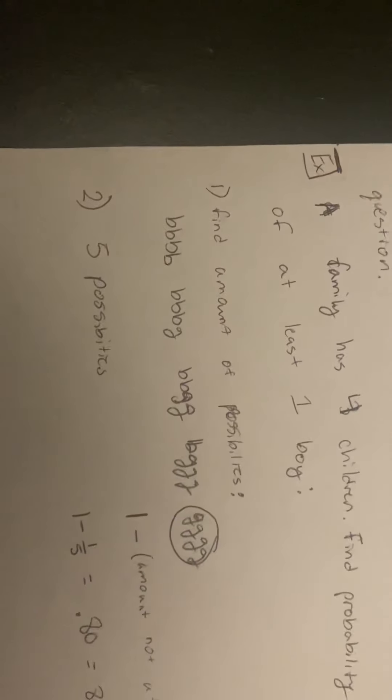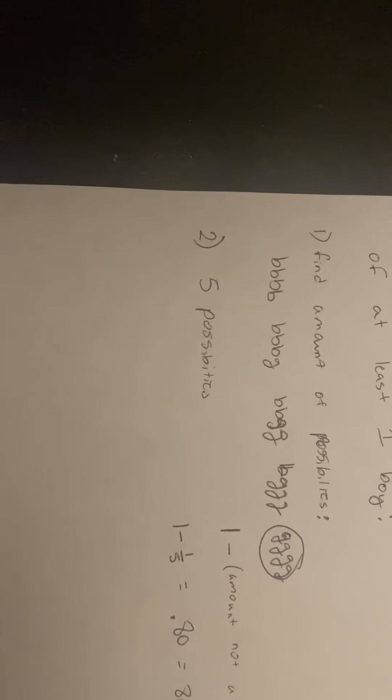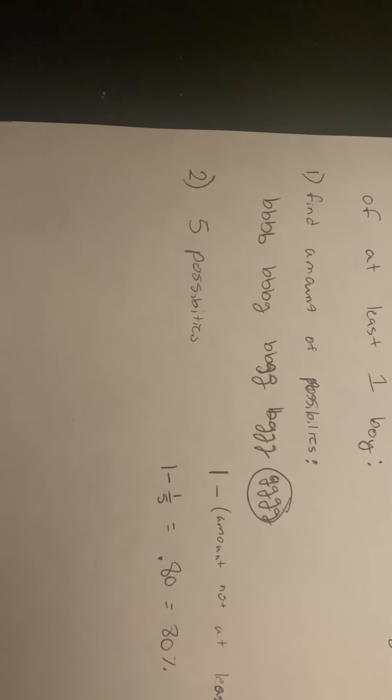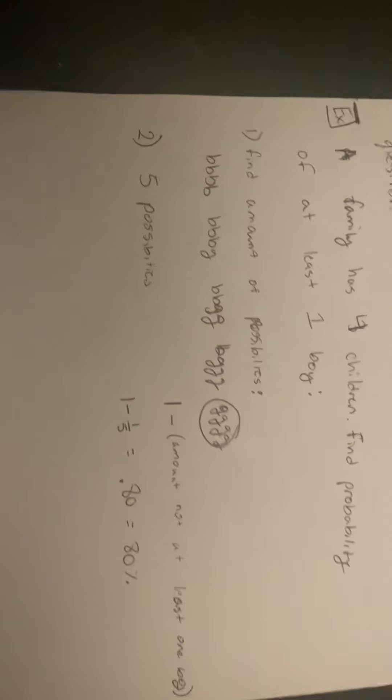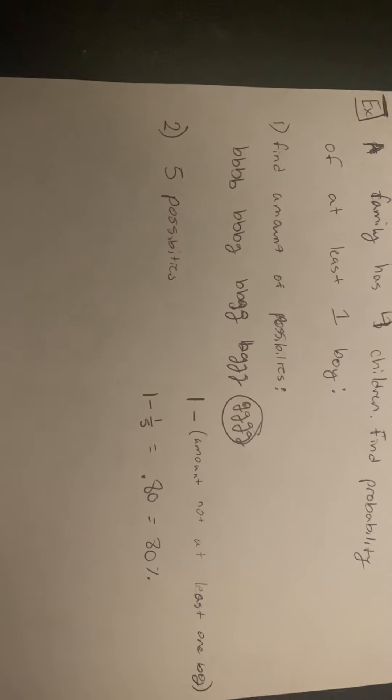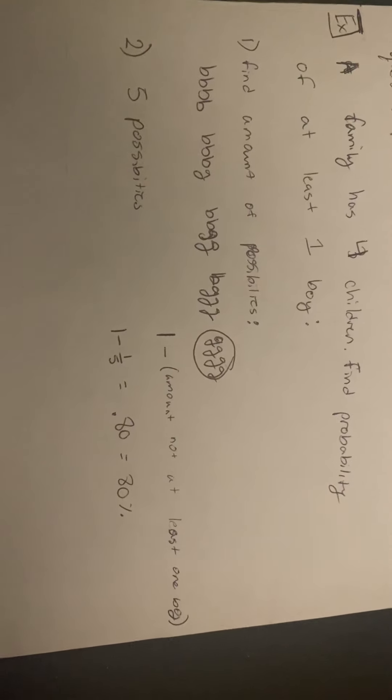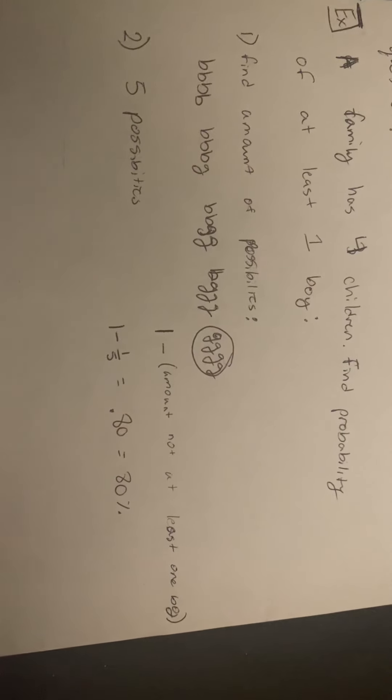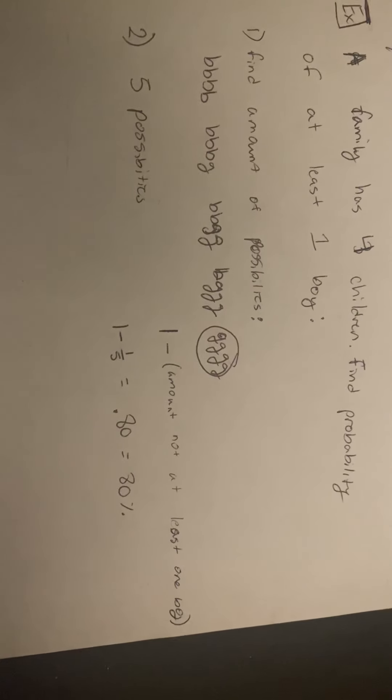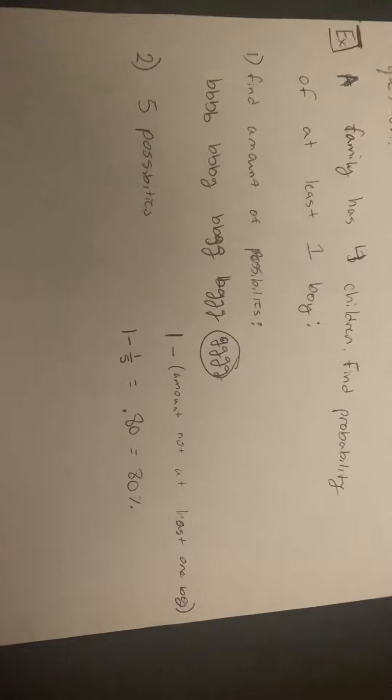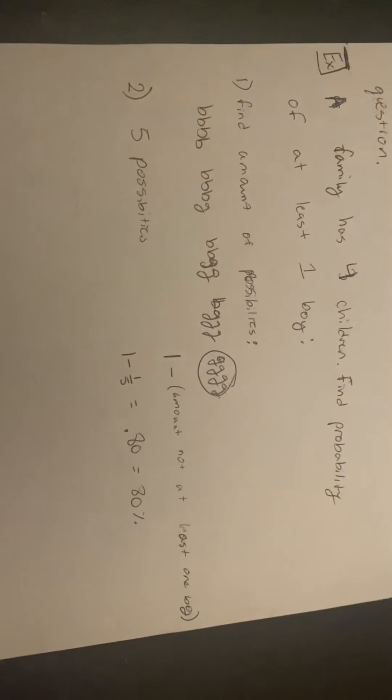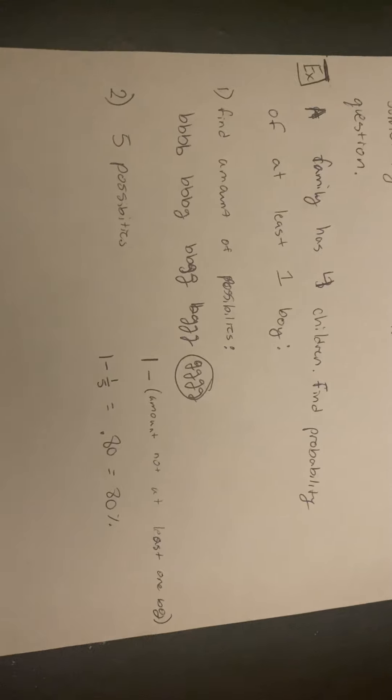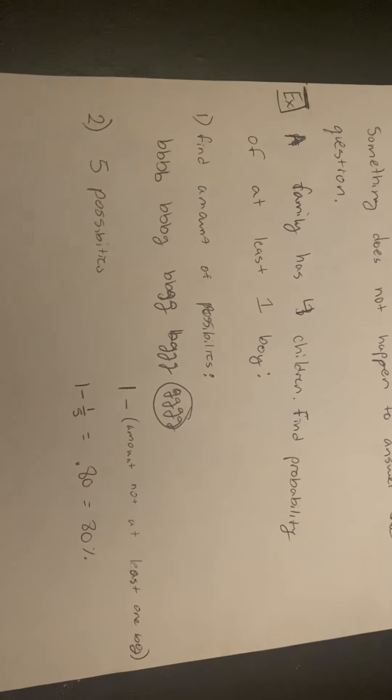From the wording of this problem, at least 1 of the children in the family has to be a boy for the outcome to be considered possible. As we look at these outcomes, we can see that the all-girl family does not contain a possible outcome in this situation, therefore is weeded out. However, we can take this value away from 100% to find the percentage of having at least 1 boy in the family.